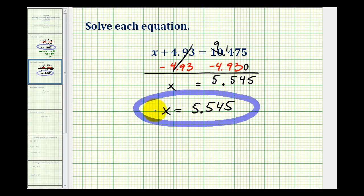So our solution is x equals 5.545, or five and 545 thousandths. And again, what that means is if we replace x with 5.545, it must satisfy the equation. And I'll go ahead and let you check this, but it does check.